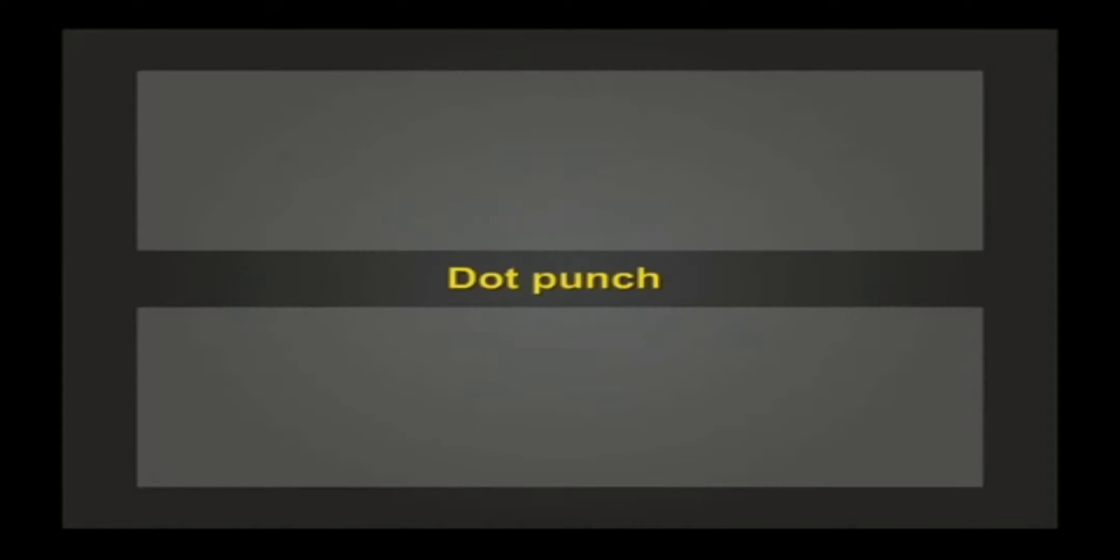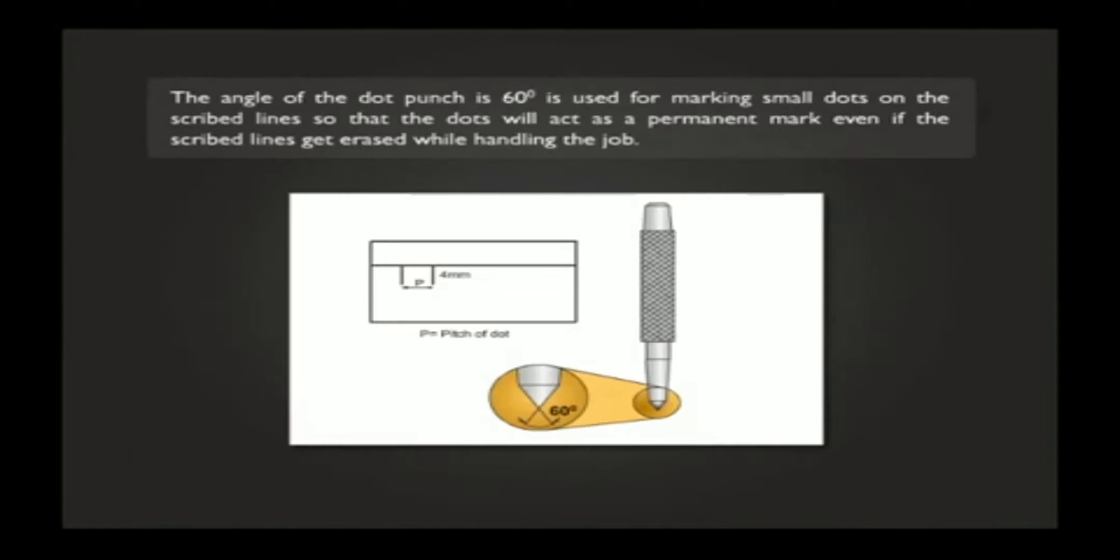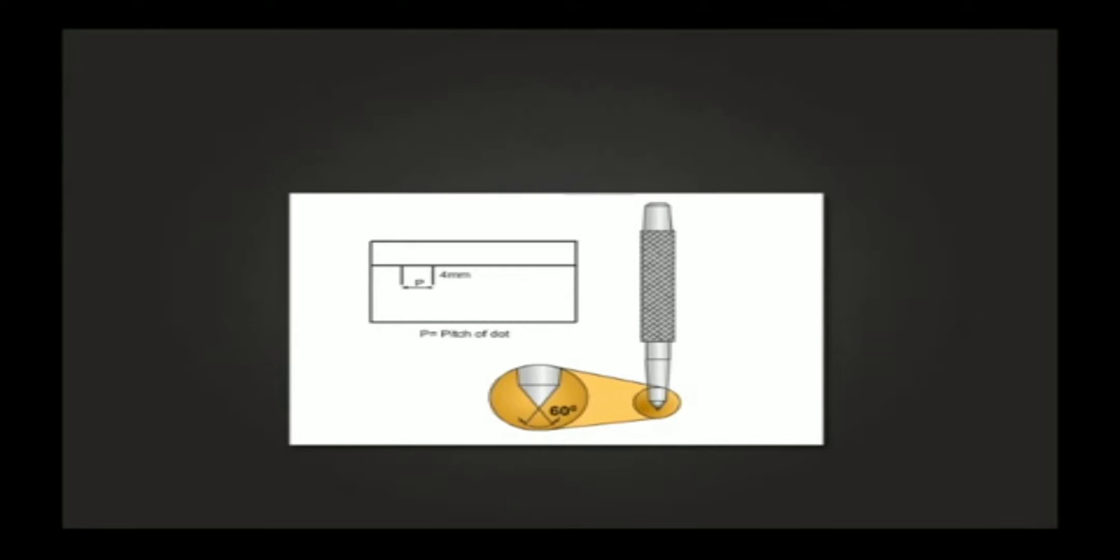The angle of the dot punch is 60 degrees, used for marking small dots on the scribed lines so that the dots will act as a permanent mark even if the scribed lines get erased while handling the job.